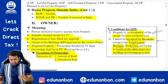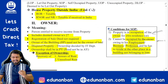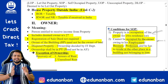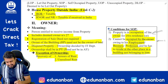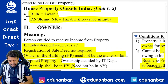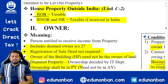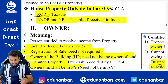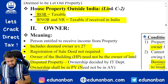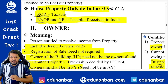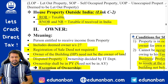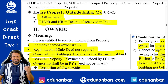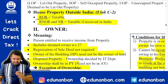If house property is outside India, then for a Resident Ordinarily Resident the rent is fully taxable because global income is taxable. For RNOR (Resident Not Ordinarily Resident) and NR (Non-Resident), the rent will be taxable only if it is received in India.